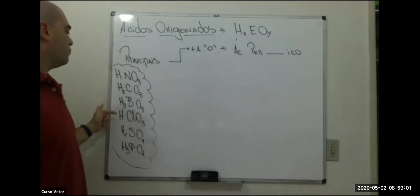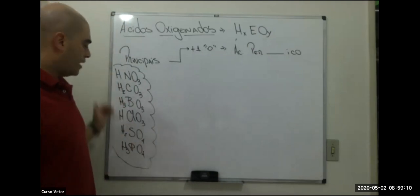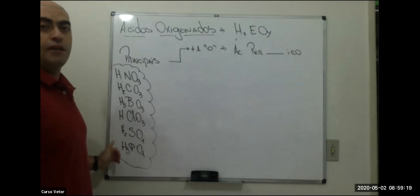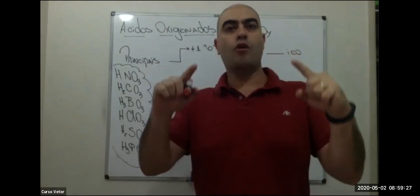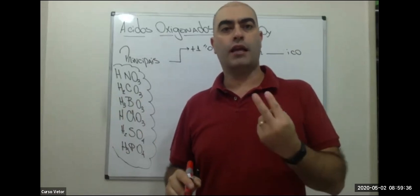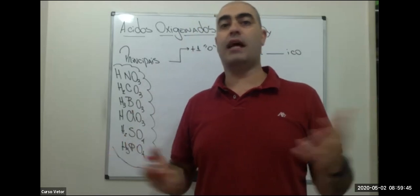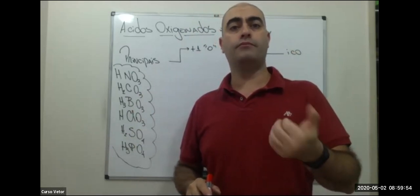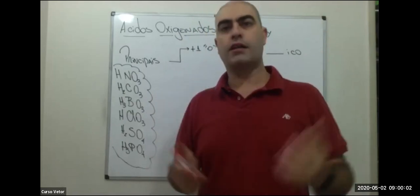Dos ácidos principais, na verdade só o clórico pode ganhar um oxigênio. Para o ácido receber um oxigênio, o átomo central precisa ter um par de elétrons sobrando para compartilhar com o oxigênio. Se ele tiver um par sobrando, consegue ganhar um oxigênio; dois pares, ganha dois oxigênios; três pares, ganha três oxigênios. Para saber se um ácido pode ganhar oxigênio, monta a estrutura e olha para o átomo central — se tiver par de elétrons sobrando, ele recebe oxigênio.